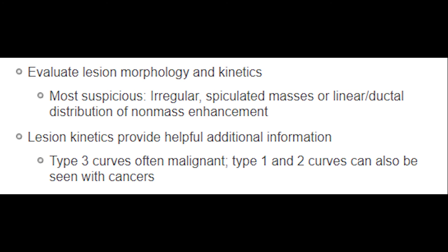To summarize breast MRI: first evaluate lesion morphology and kinetics. Most suspicious lesions have irregular borders, are speculated masses, or show linear ductal distribution of enhancement. Lesion kinetics provide helpful additional information — Type 3 curves are often malignant. Type 1 and Type 2 curves can also be seen with cancers, but the probability of benign nature increases with Type 1 or Type 2 curves.